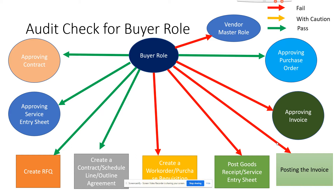If you understand this process and this particular diagram, auditing will be very easy. Of course you need reports and things to check, but this is the core concept. Anything in red is a fail, anything yellow is caution, and anything green is passed. Sometimes green or red becomes yellow, but red never becomes green directly.